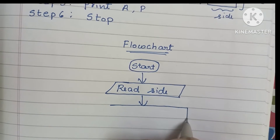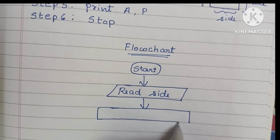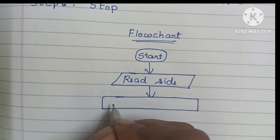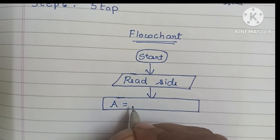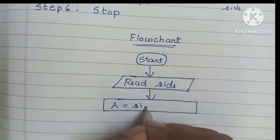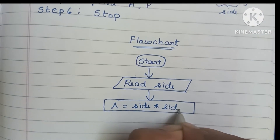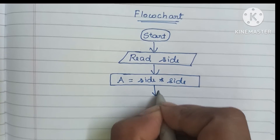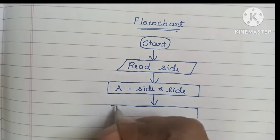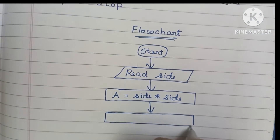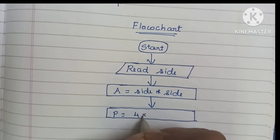Calculations are done within a rectangular shape. First we draw a rectangle and find the area of a square — that is side × side. Next we find the perimeter of a square — that is P = 4 × side.